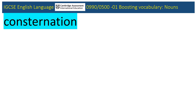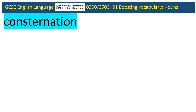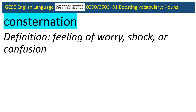Next noun is consternation, starring within the June 2018 0500 paper. The text is about coal mining, with shaft referring to the vertical passage from ground level down towards the pit, and iron box being a clumsy metaphor for the lift. It has just plummeted seven metres or so due to an electrical fault. How might the miners be feeling about this? Have a go at defining consternation. Well, it's a feeling of worry, shock and confusion — what on earth is happening to the men?